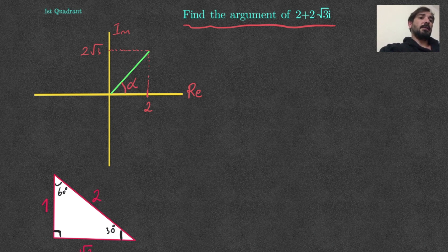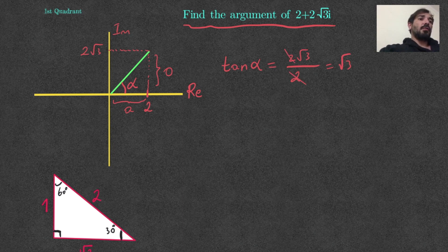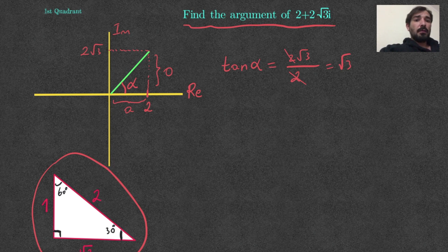To get this angle — the argument — we need to find this angle alpha. To get alpha we use tangent alpha equals opposite over adjacent. Here the opposite side is 2√3 and the adjacent side is 2, so dividing gives √3. Now, which tangent value equals √3? Looking at our special triangle, tangent 60° equals √3 over 1, which is √3.